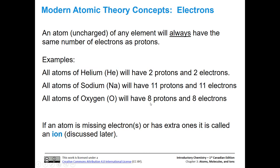Now we're going to talk about uncharged atoms — if they were charged, we'd call them ions. An uncharged atom of any element always has the same number of electrons as protons; they have to be equal. Protons have a plus one charge and electrons have a negative one charge, so they offset each other. Helium has two protons (plus two) and two electrons (minus two) for an overall neutral atom. Sodium has 11 protons and 11 electrons to offset that charge.